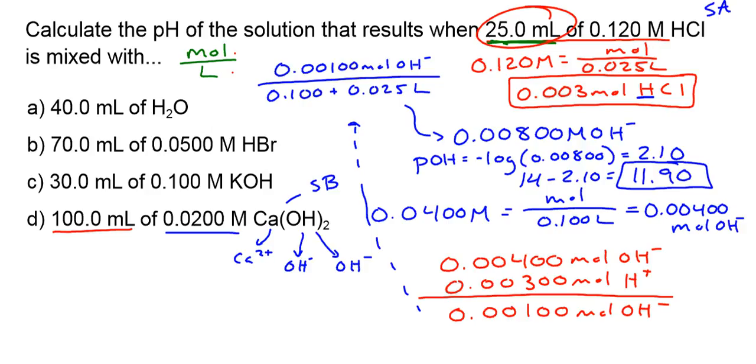So we went from dilution to combining two acids to a neutralization to not only a neutralization but having an excess of OH minus. And that is how you approach each one, by talking about the total moles over the total volume.